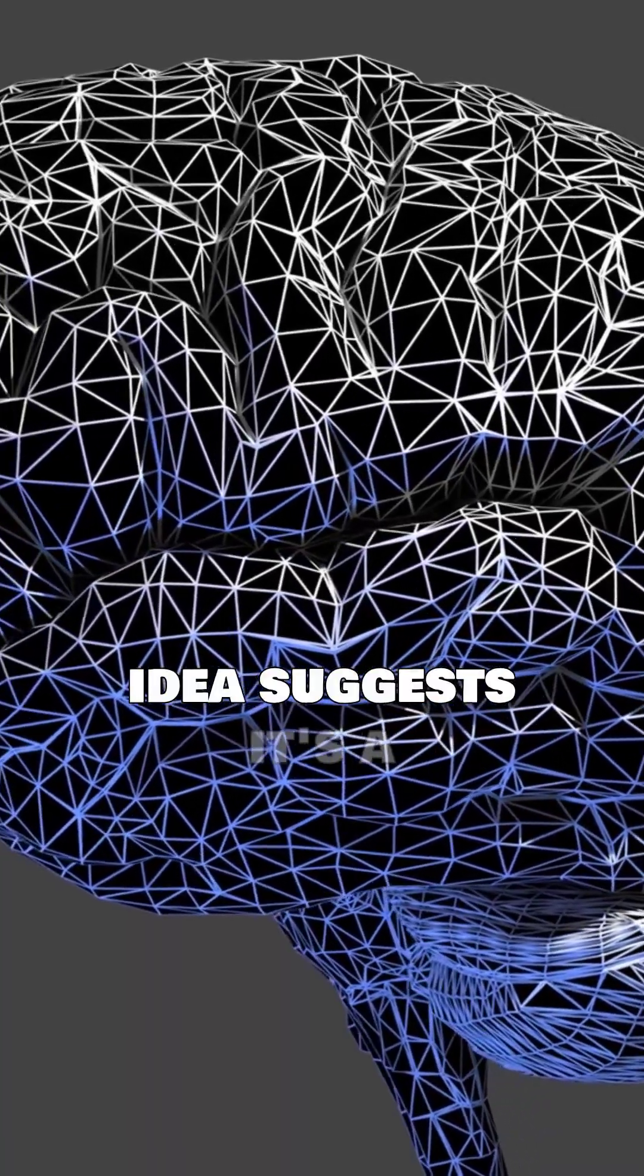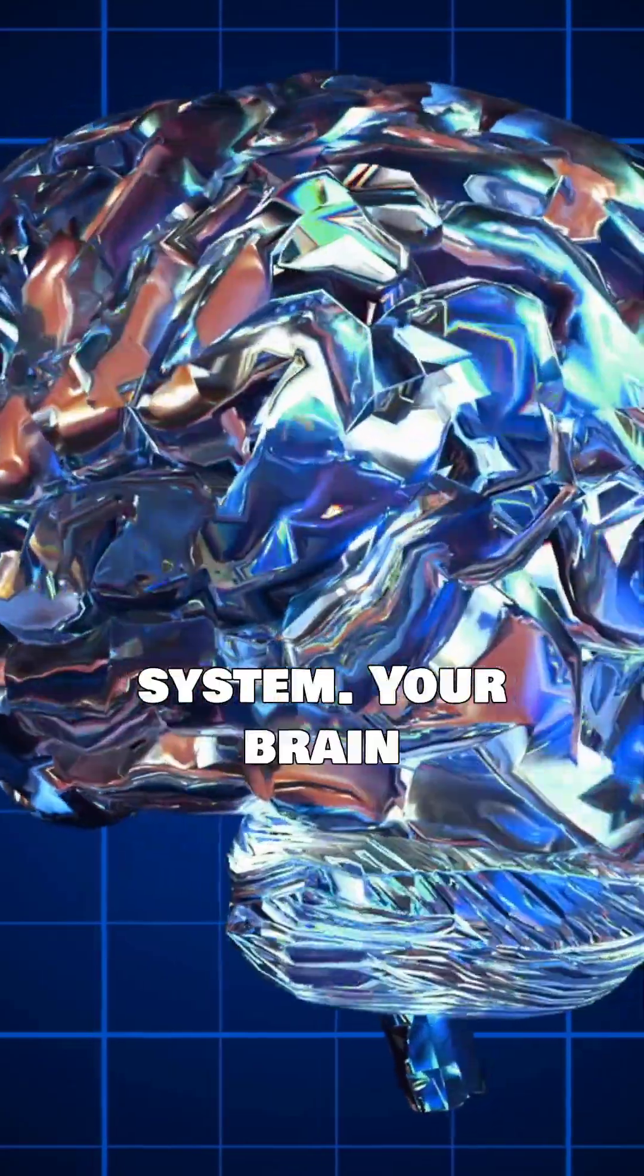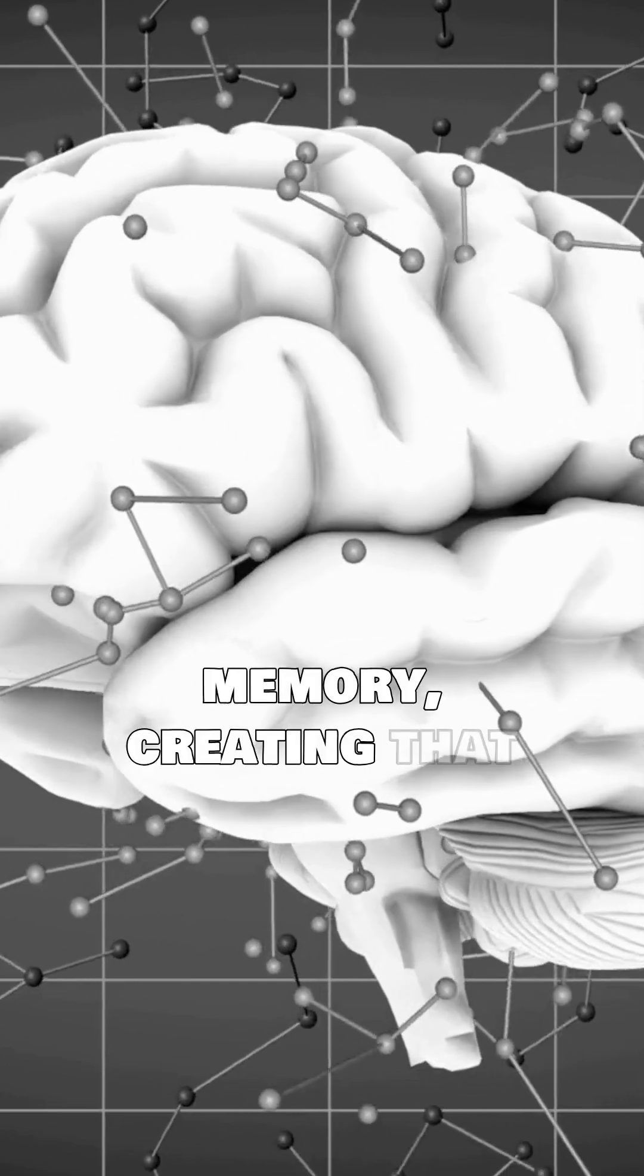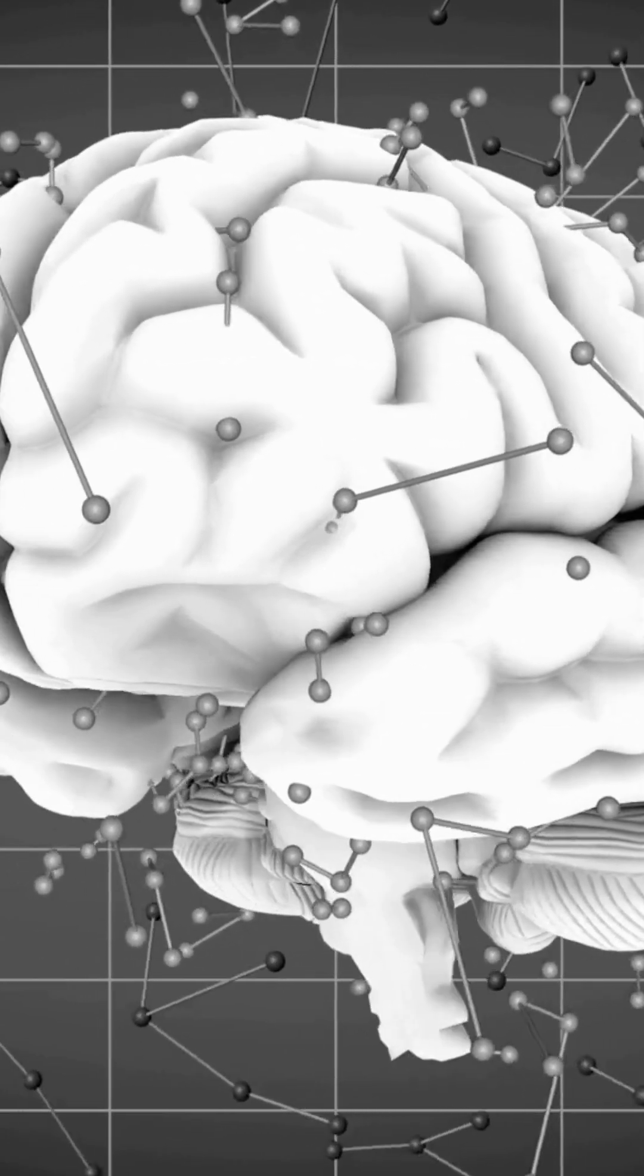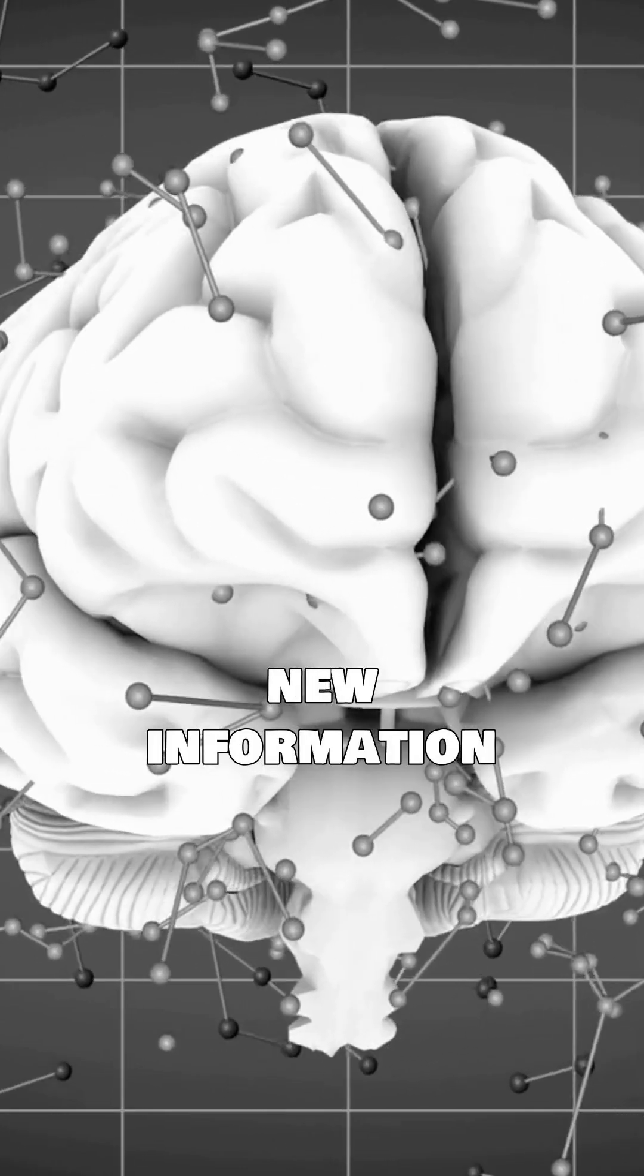One leading idea suggests it's a temporary glitch in our brain's memory system. Your brain might process new sensory input as if it's retrieving an old memory, creating that uncanny feeling of familiarity. It's like a filing error, tagging new information as old.